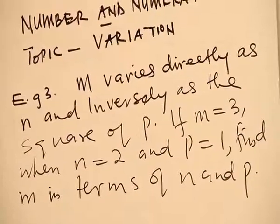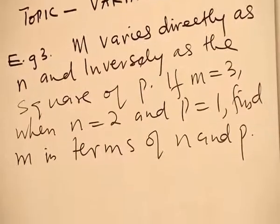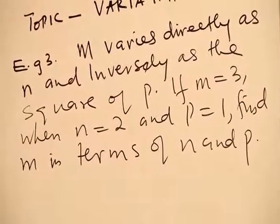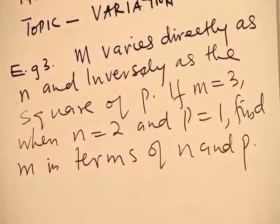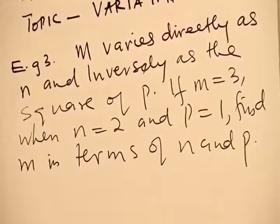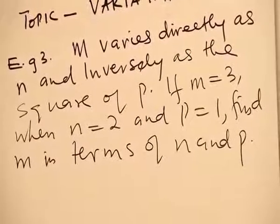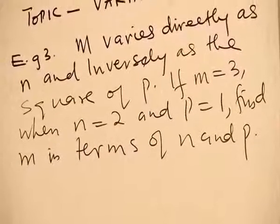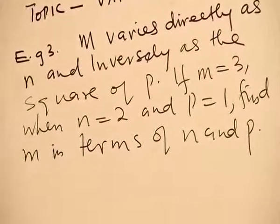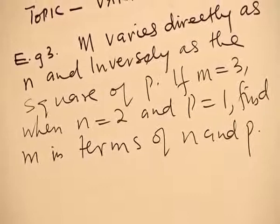Example 3: M varies directly as N and inversely as the square of P. If M is equal to 3 when N is equal to 2 and P equals 1, find M in terms of N and P.